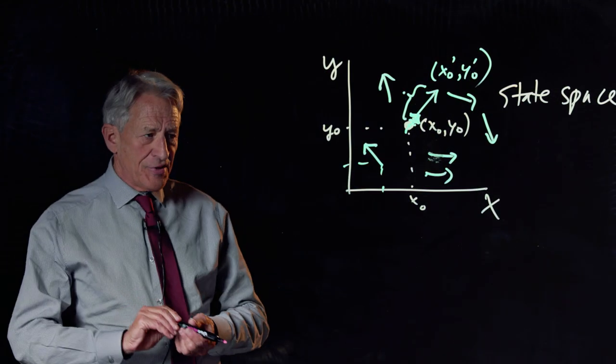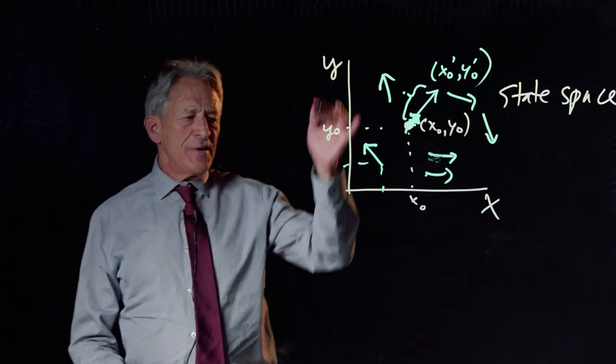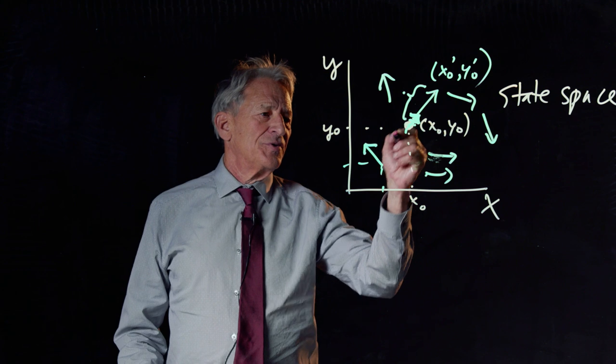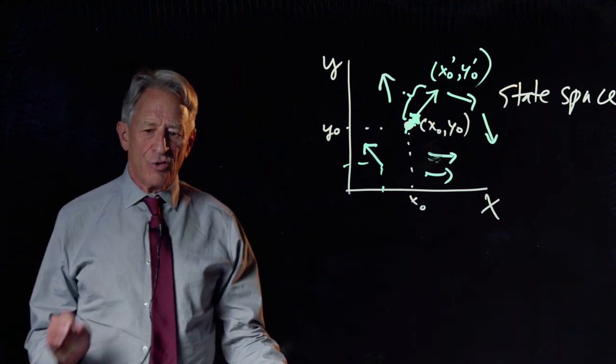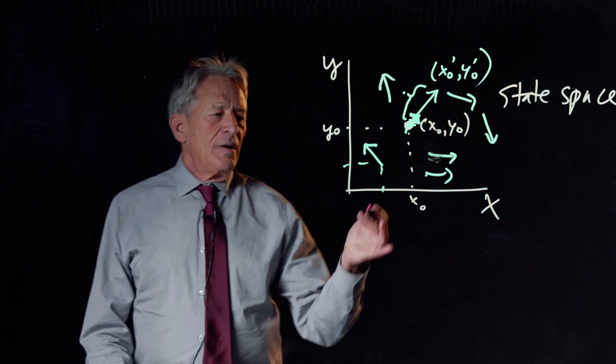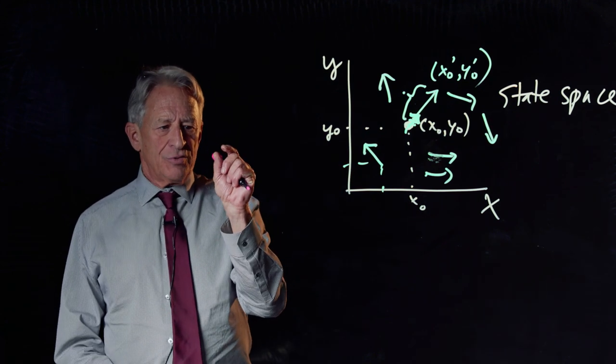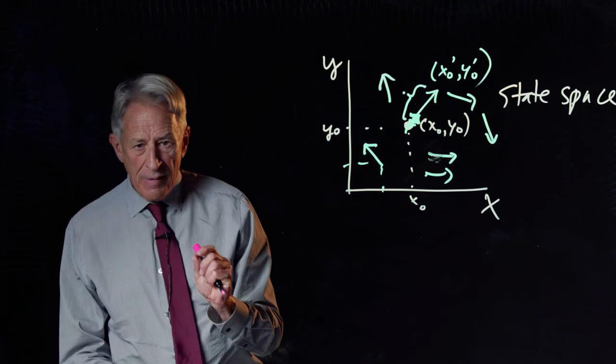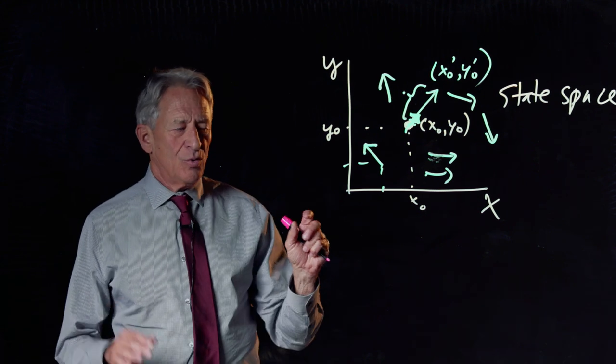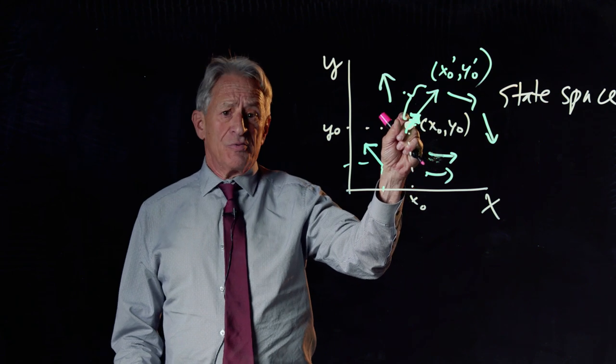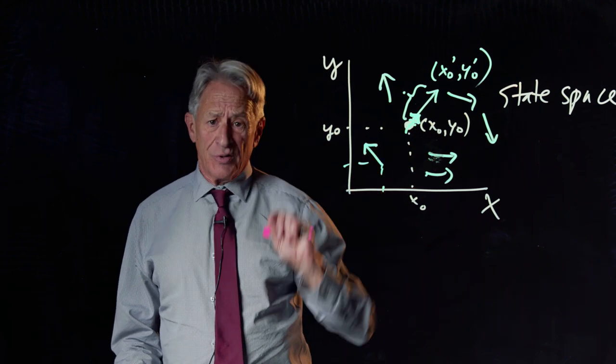So that's state space, the black, and the change arrows, which are green. And we talked about letting those change arrows get shorter and shorter and shorter. And what happens in the limit as those change arrows get super, super, super short?